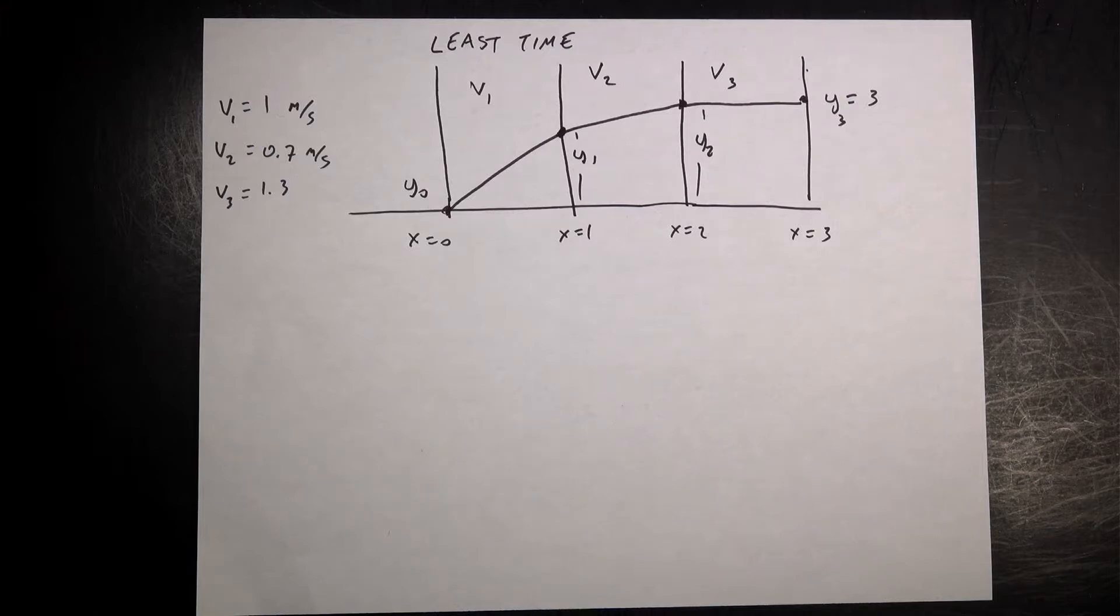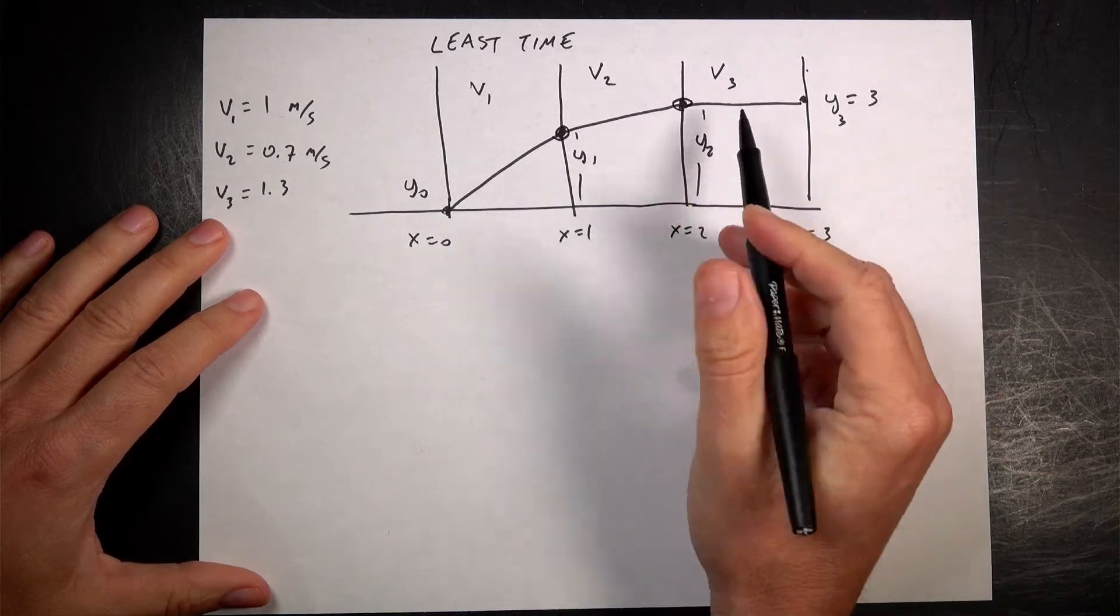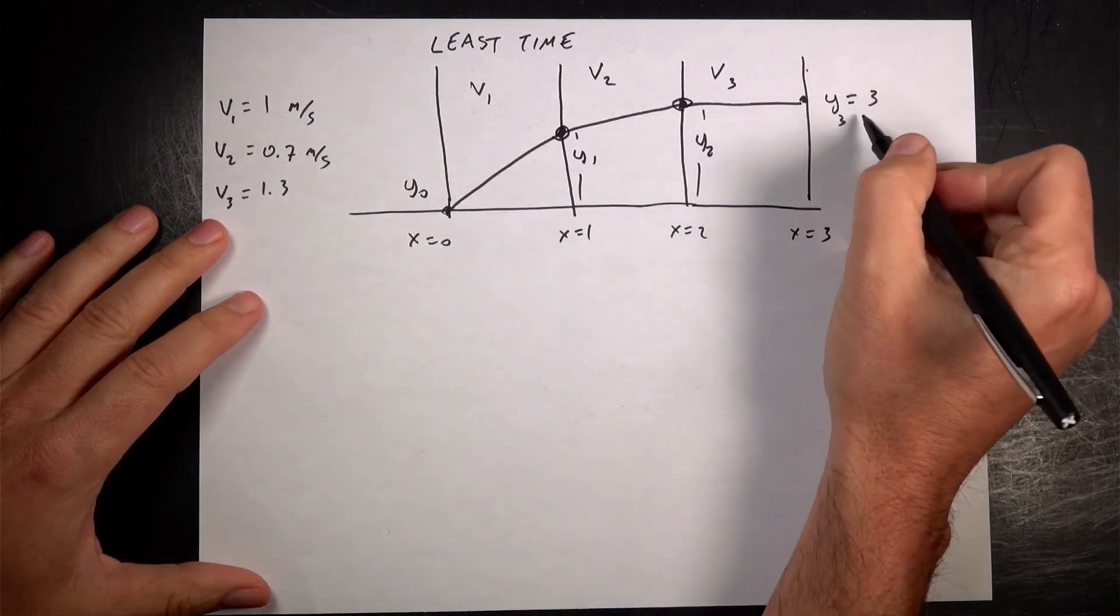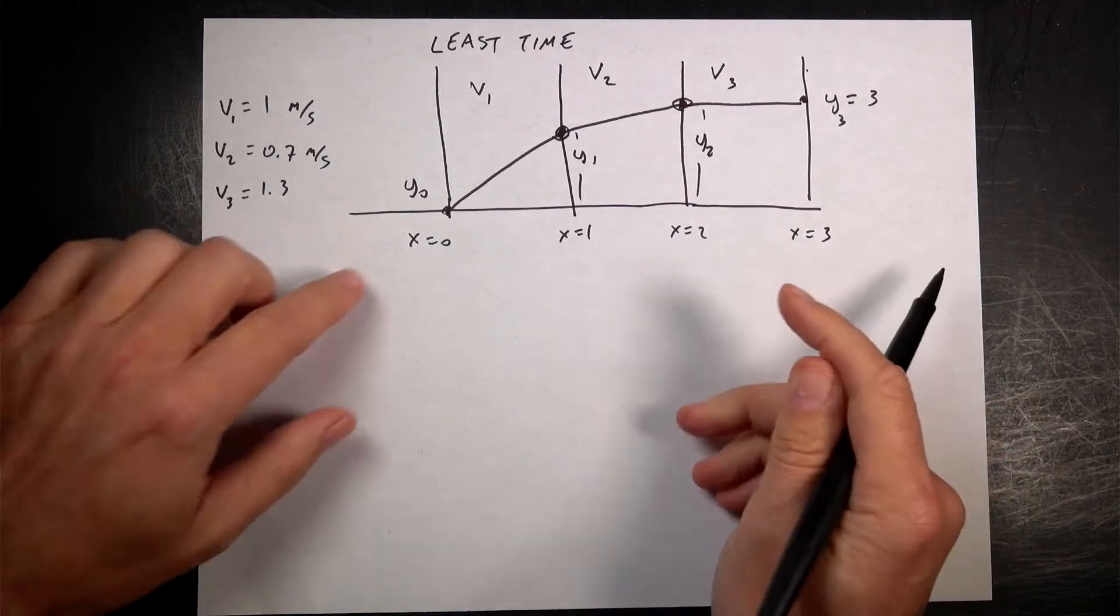And so the question is, where should you aim for the transition points to get over to here, Y equals, Y3 is 3 meters in the least amount of time, right?